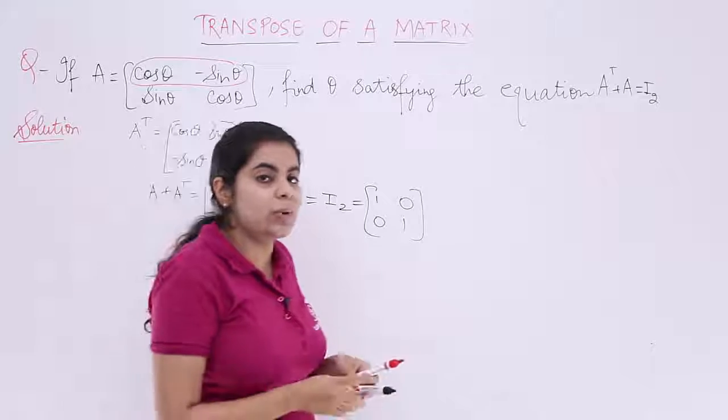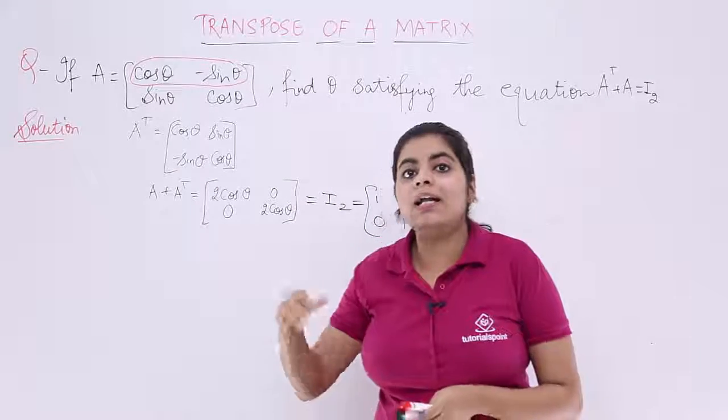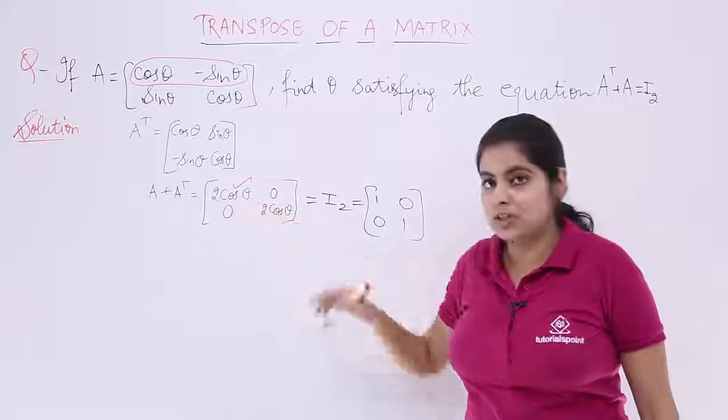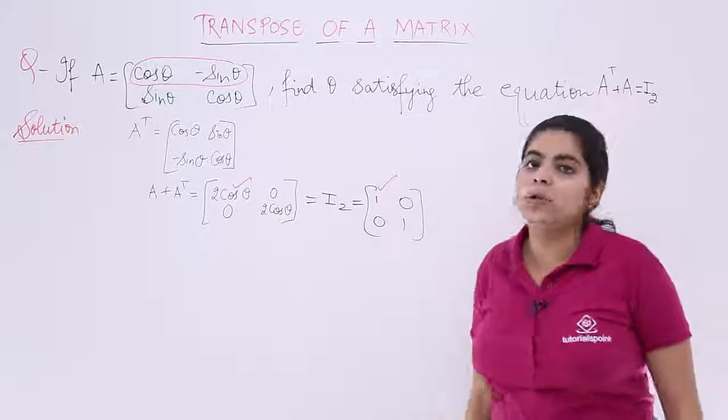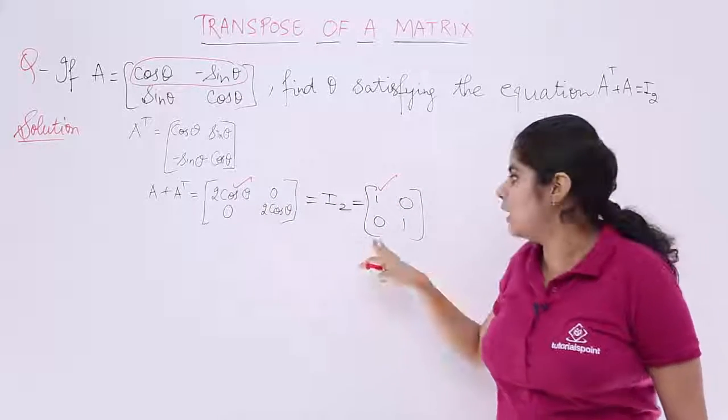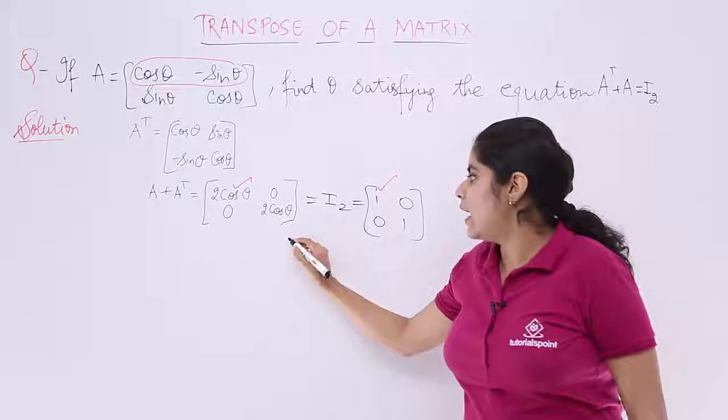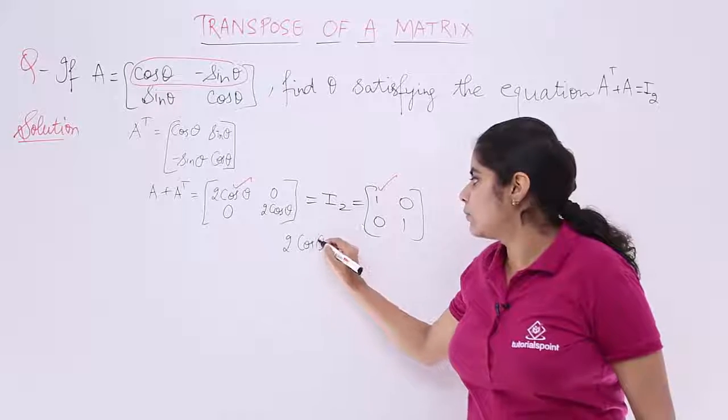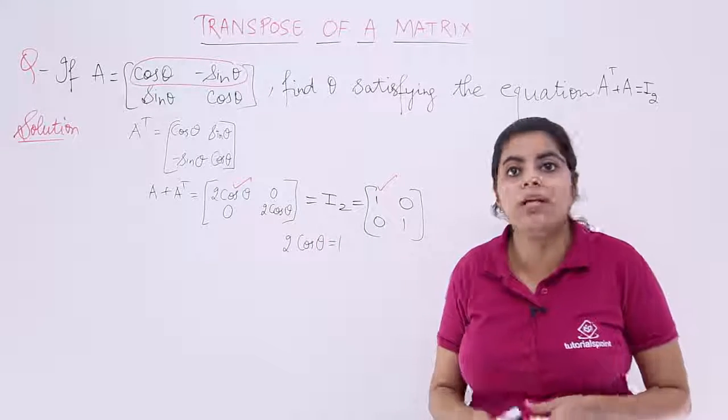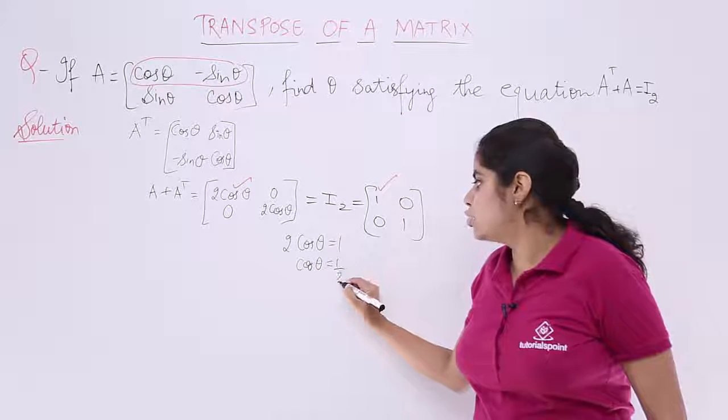When this is equal to 1 0 0 1, I know that the elements individually are equal to these elements. If I have 2 cos theta as the first element here, it should be equal to 1. 0 is already equal to 0. And 2 cos theta equals 1. It means I have 2 cos theta equals 1, and cos theta equals 1 by 2.